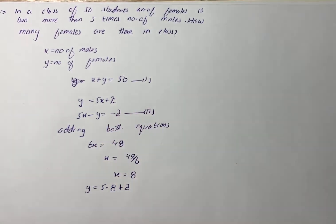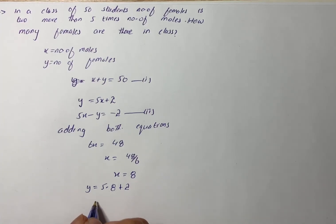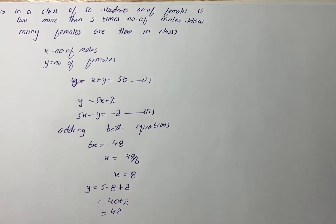This gives us 40 plus 2, which equals 42. Therefore, the number of males is 8 and the number of females is 42.